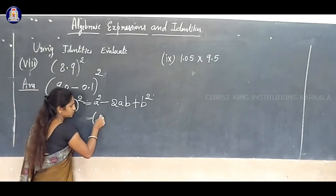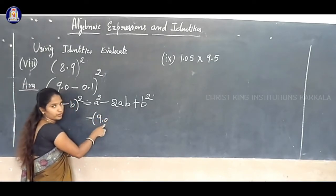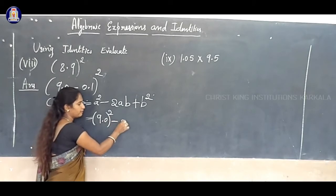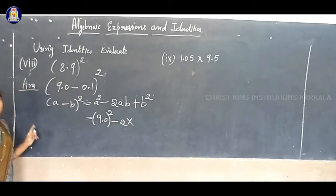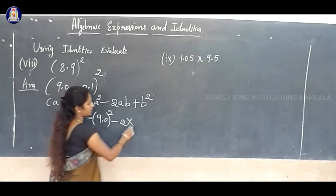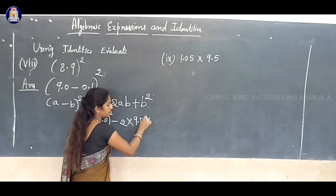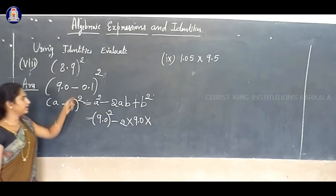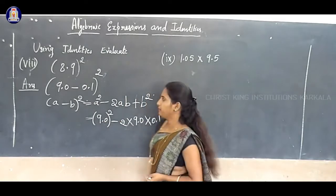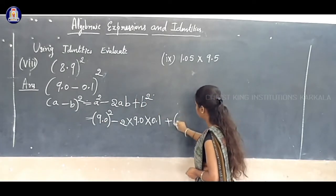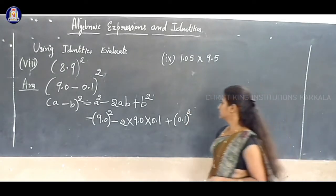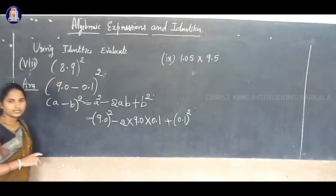A is 9, so write 9.0. 9.0 whole square minus 2 into A into B. What is A? A is 9.0. What is B? B value is 0.1. Plus B square, which is 0.1 whole square. Now simplify.